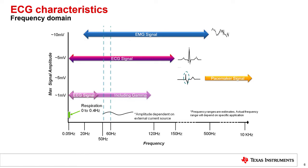Pacemakers are electronic medical devices used by patients with abnormal heart rates or arrhythmias. These devices initiate the cardiac cycle in a well-controlled manner such that the heart can maintain a normal level of function. Other signals often measured in biopotential applications include EMG (electromyogram), EEG (electroencephalogram), and respiration.